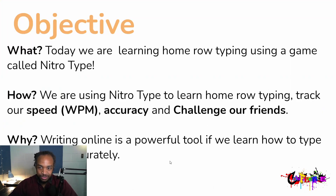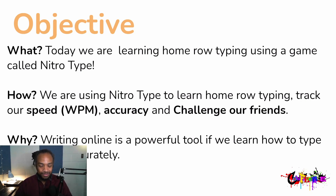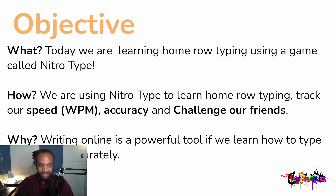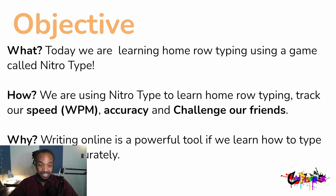Here's our objective today: we're going to learn home row typing using a game called Nitro Type. On typing.com we've been practicing home row typing — that is the best way to improve your accuracy and your speed as a typer. I know some of you who are new to home row might be really slow because you're just learning where the letters are, but that's okay. That's how I started — letter by letter — but little by little I learned where all the keys are and memorized them.